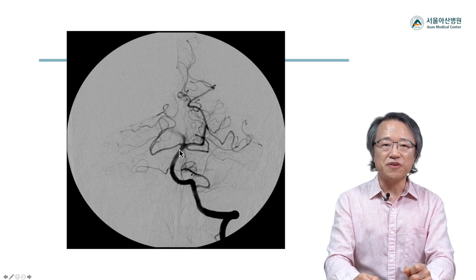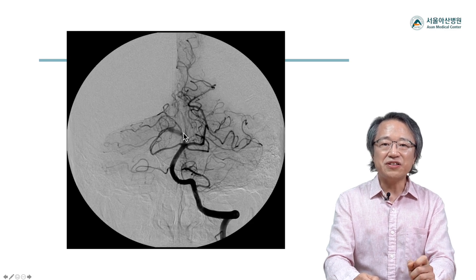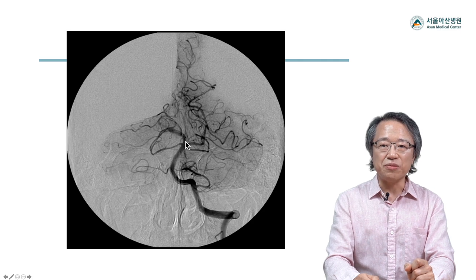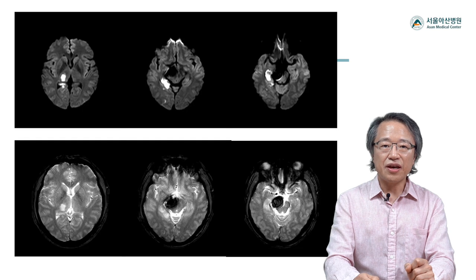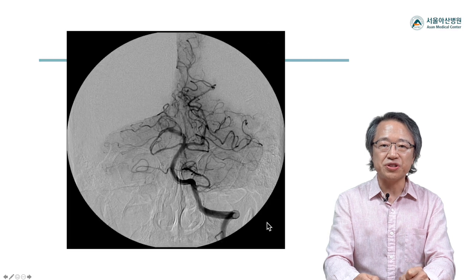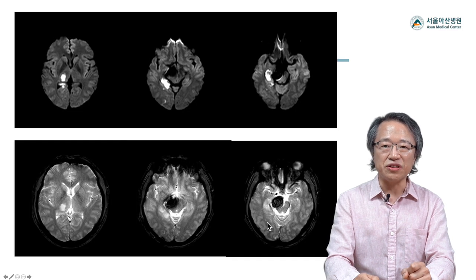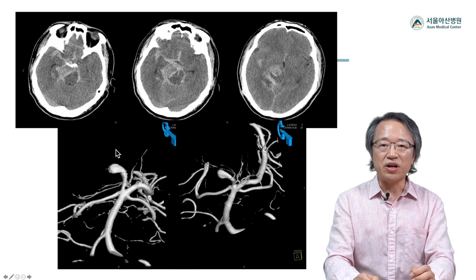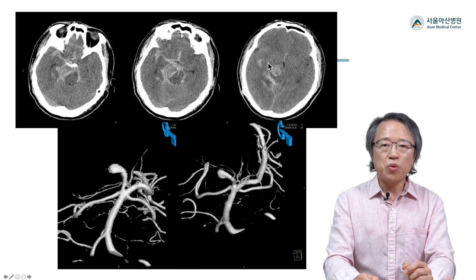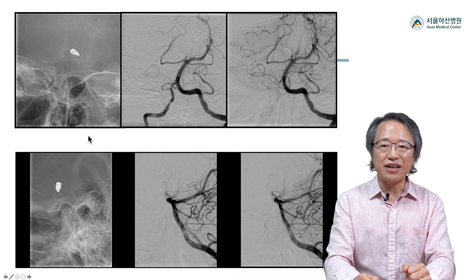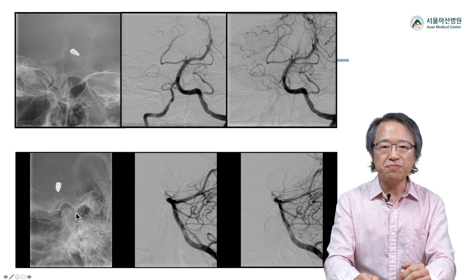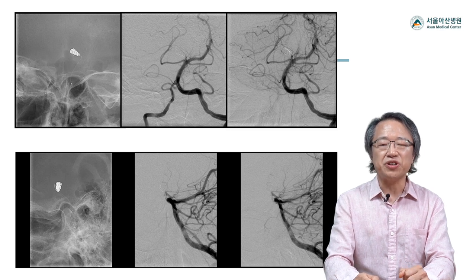Subsequent DSA showed faint filling of the dilated proximal PCA and occlusion of the peripheral branches. This is DWI and GRE. While we were discussing the management plan, unfortunately the lesion ruptured and we trapped the PCA right away. As in this case, a dissecting lesion can rupture even in the context of ischemic presentation.